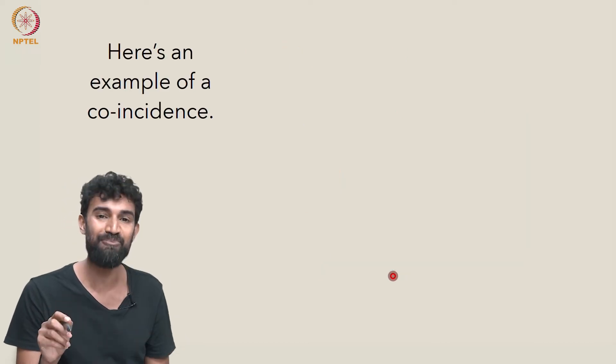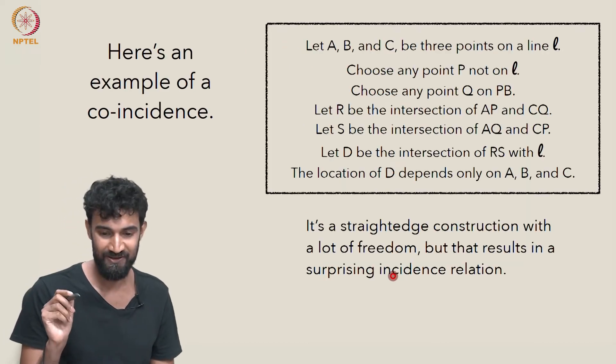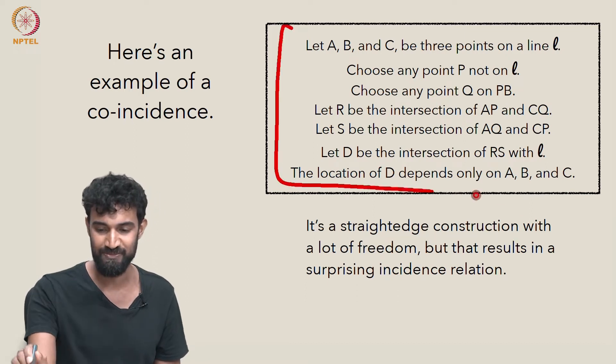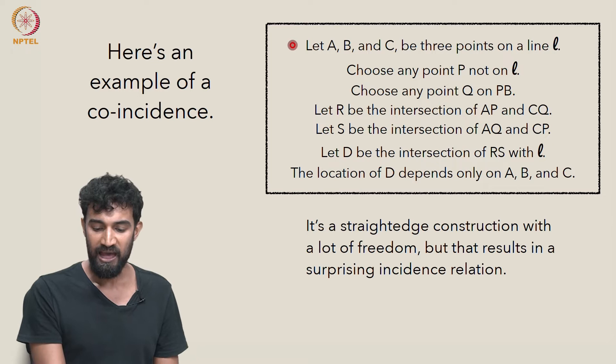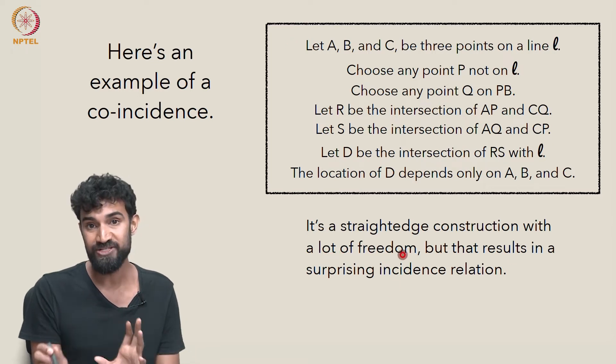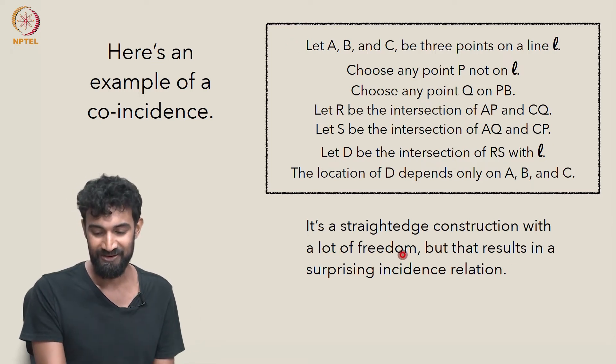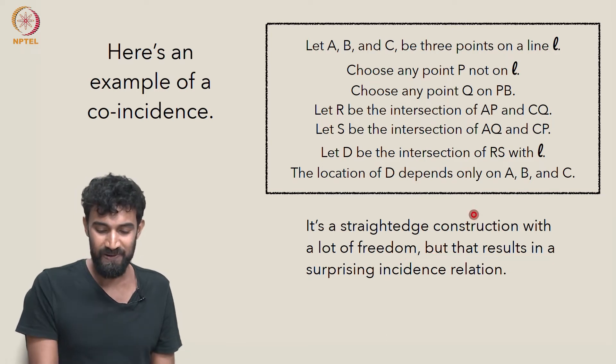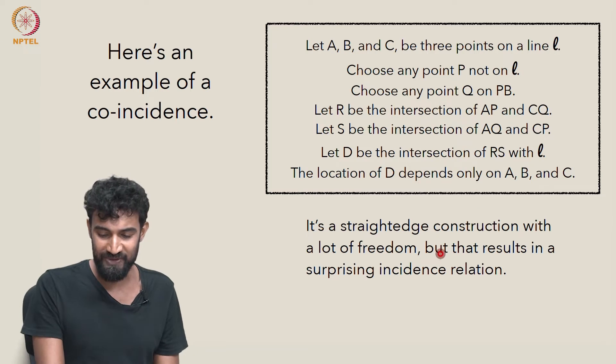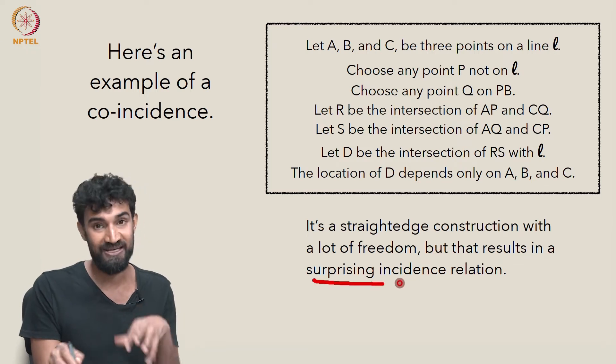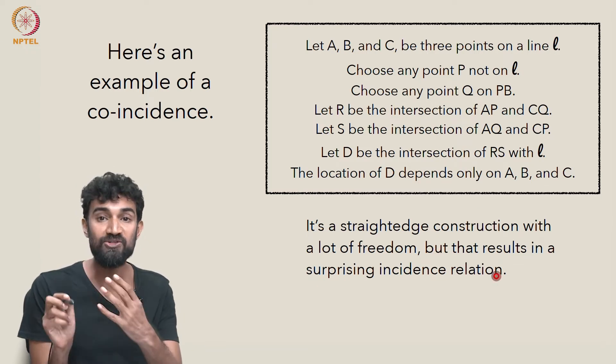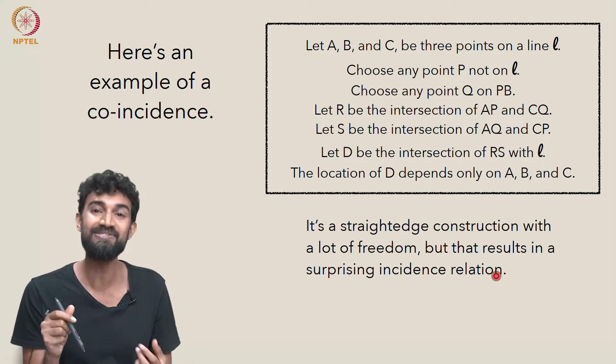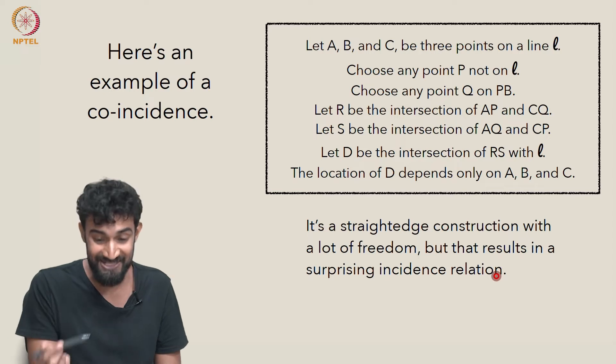So here's an example of a co-incidence. It's a straightforward construction. This here is basically a recipe, a construction, and it gives us a lot of freedom. There's a bunch of choices we can make, and we'll see that in a second. But somehow, despite all that freedom of choice, in the end of the day, we get a surprising incidence relation, which holds no matter how we make those choices. So that's the part that feels like a co-incidence, and indeed is a co-incidence.